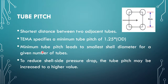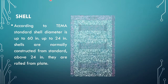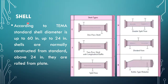Next is the shell. The shell is a main important part of the shell and tube heat exchanger — it covers the tube bundle inside. According to TEMA standards, shell diameter is up to 60 inches. Up to 24 inches, shells are normally constructed from standard pipe, and above 24 inches they are rolled from plates.